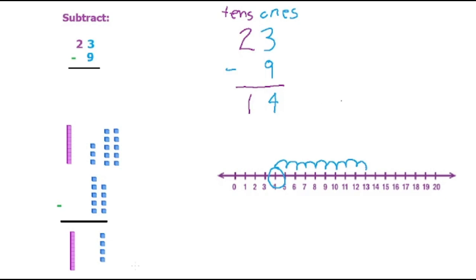So how would you do that if you don't want to keep using blocks? So how you would do it is like this. So 23 minus 9.